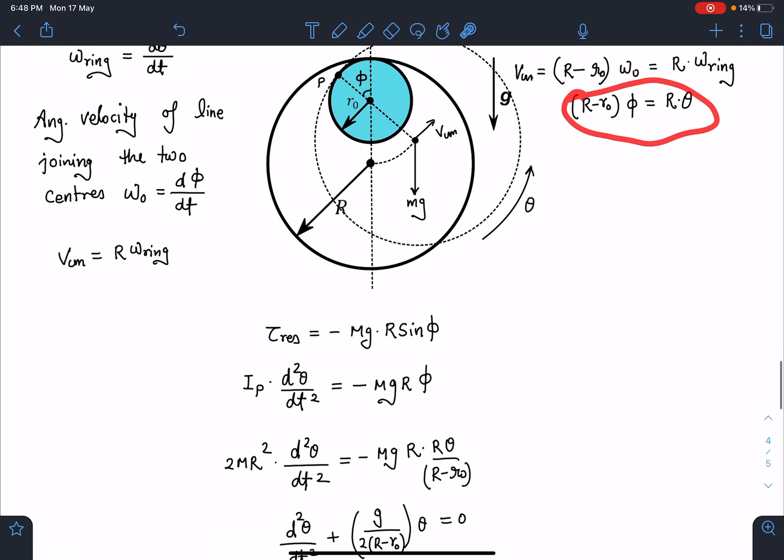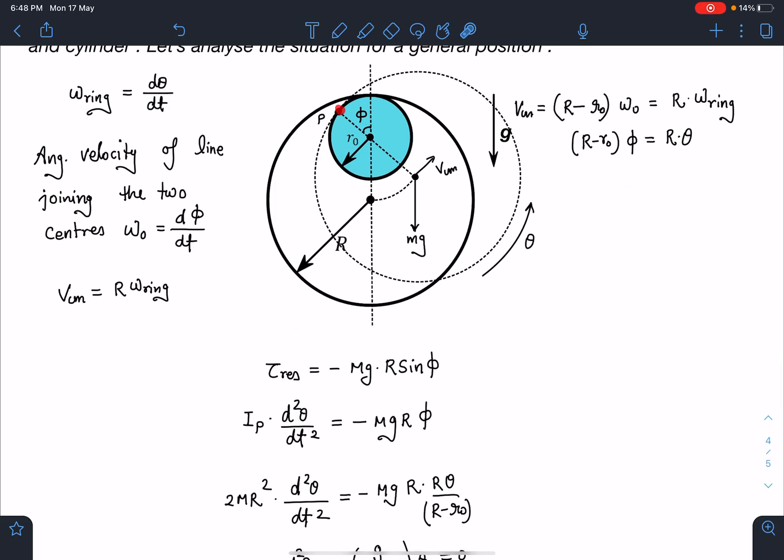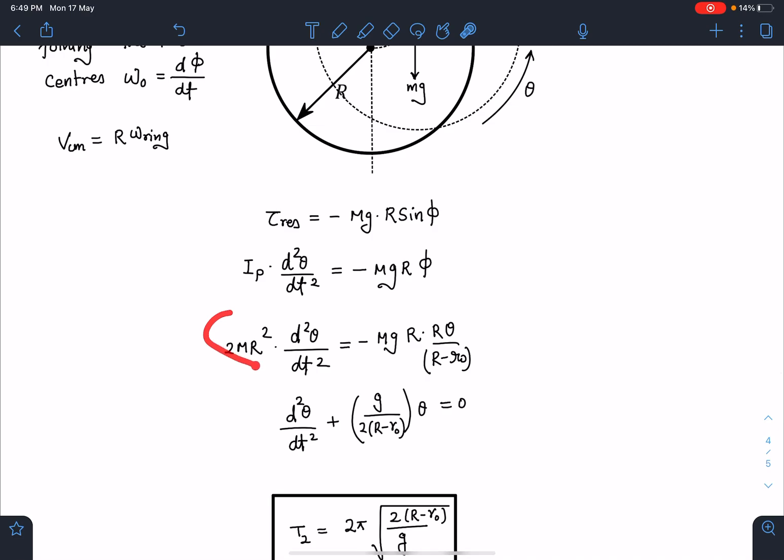So let's substitute IP. IP of ring about this point P, I can write this IP value as 2MR². MR² plus MR², parallel axis theorem we can use. So this is going to be 2MR²·d²θ/dt² - MgR. Now I am going to convert this φ into θ. So φ value is Rθ/(R - R0).